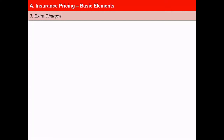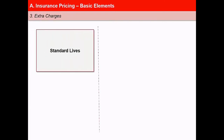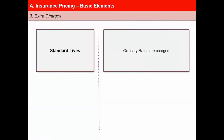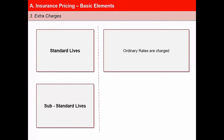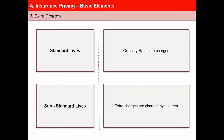Extra charges are divided into two parts. First is standard lives — a group of insured individuals not subject to any significant factors that would pose extra risk. Ordinary rates are charged on standard life individuals. Second is substandard lives. If a person is suffering from certain health problems like heart ailments or diabetes that can pose a hazard to life, an extra premium will be imposed by way of a health extra. This is known as extra charges.